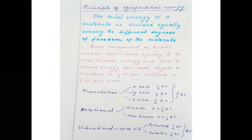When we take the Cartesian coordinate system into consideration, these motions can be resolved into several components. Translational motion is the motion of the entire molecule moving from place to place. The total energy of the molecule is divided equally among the different degrees of freedom. Translational motion can be divided into three components: motion in the x direction, y direction, and z direction.